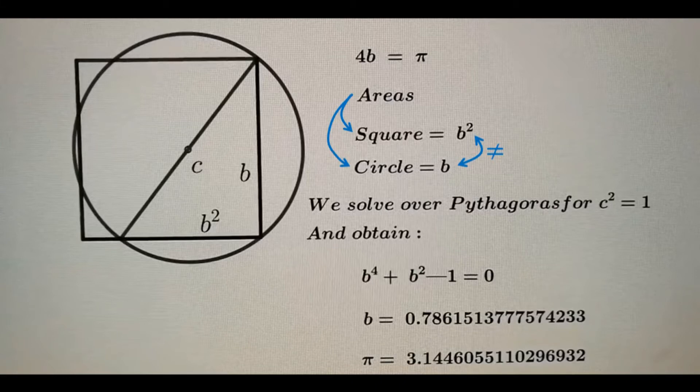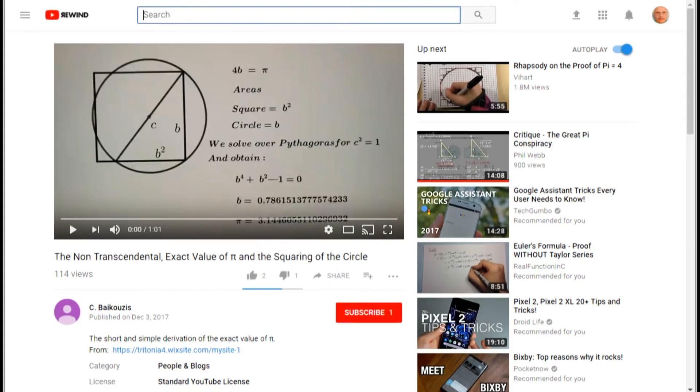First off, the areas he gives for the circle and the square are not equal, unless B equals B squared, implying B equals 1. But, since he says B doesn't equal 1, then the circle and the square don't have the same areas, so he really needs to take the squaring the circle part out of his title.